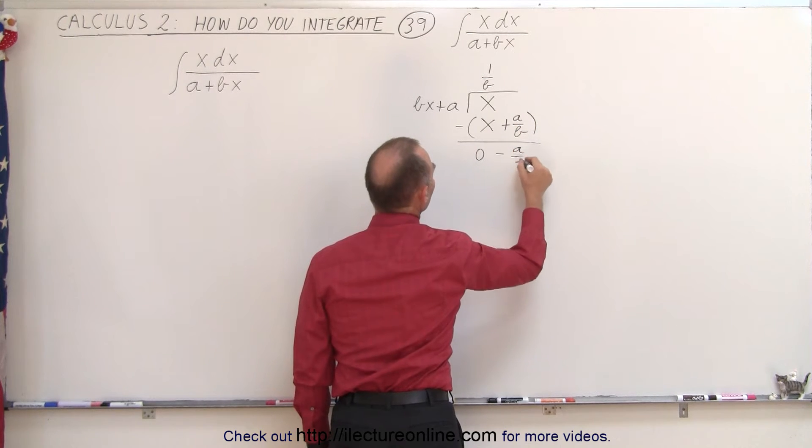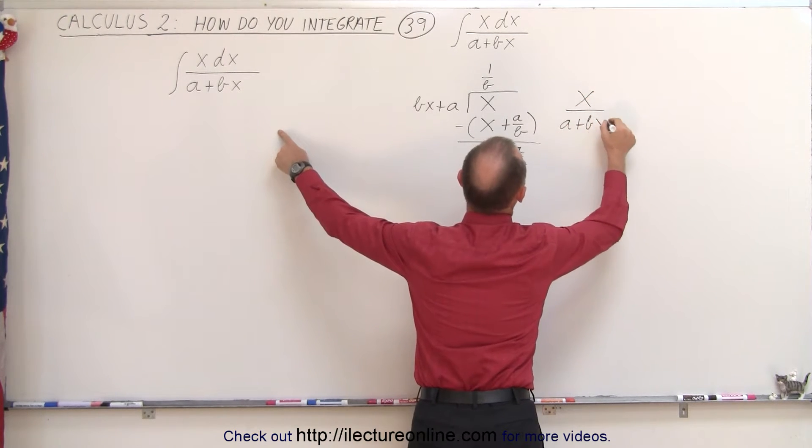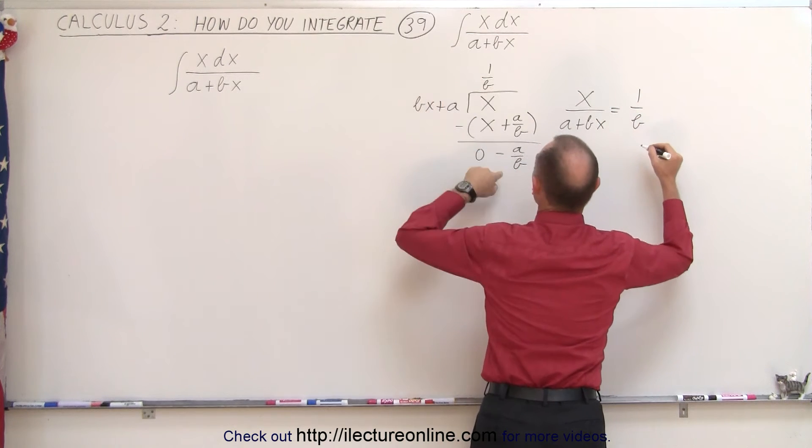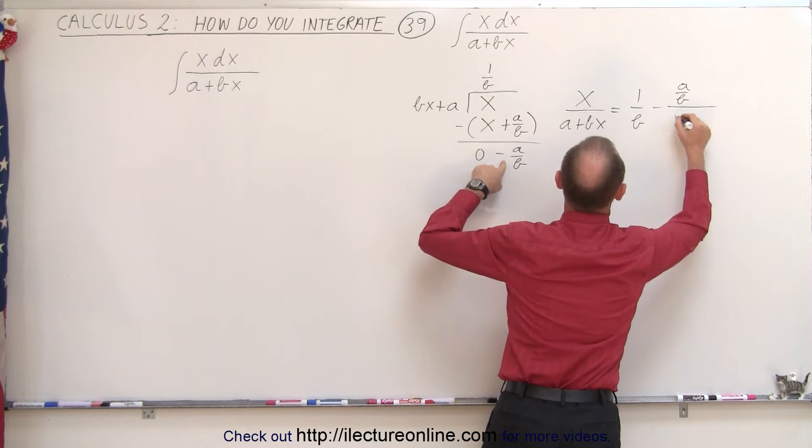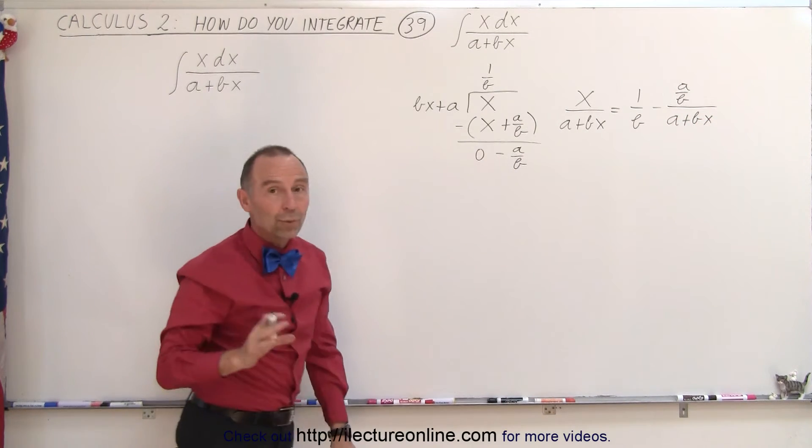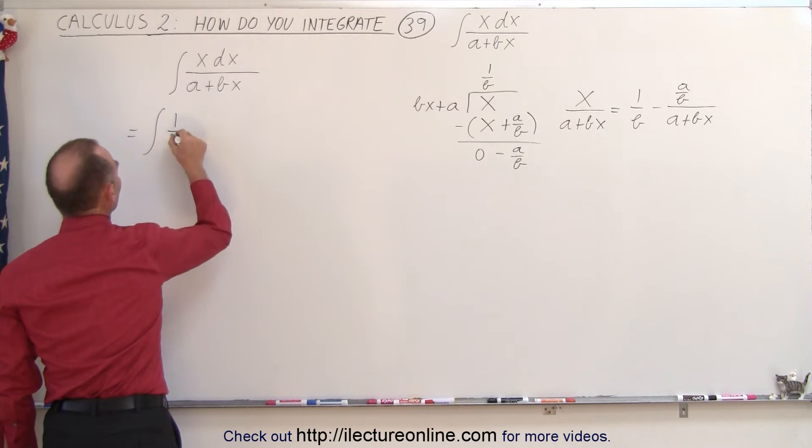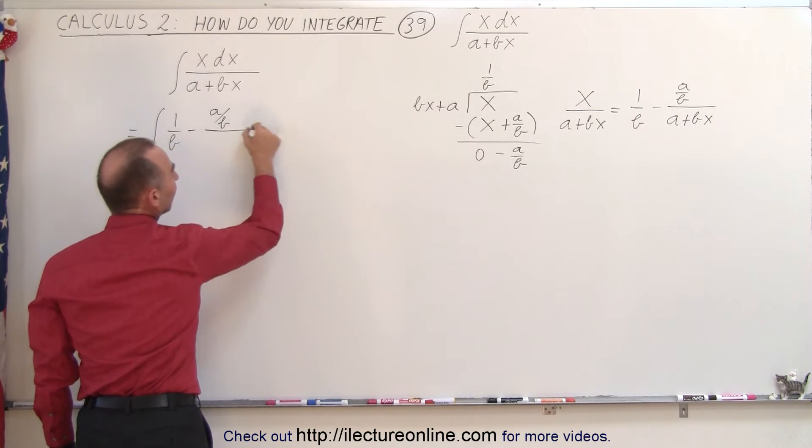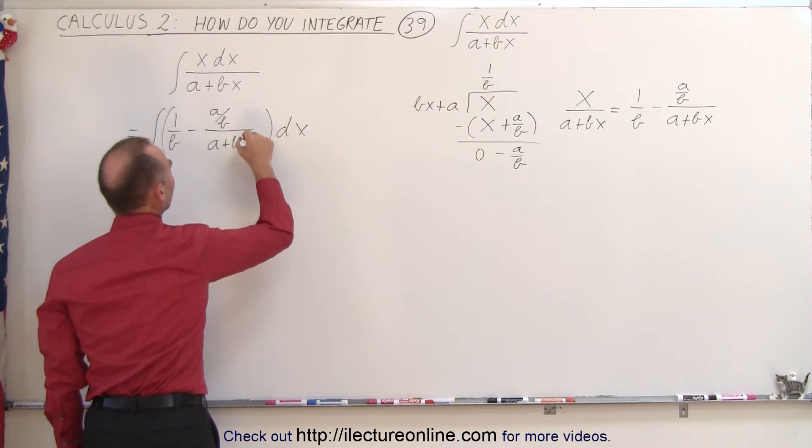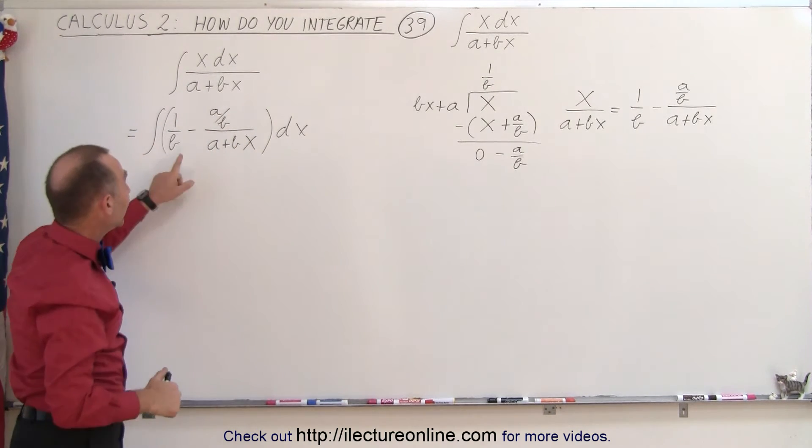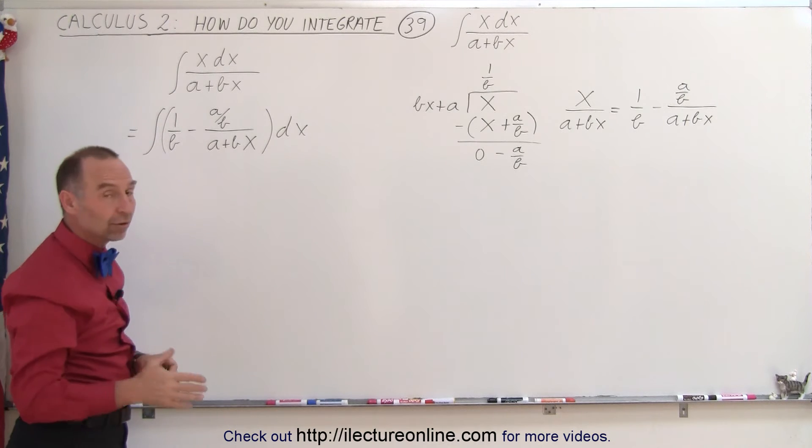And 0 minus this is minus a over b. Which means that we can take the fraction x over a plus bx and write it equal to 1 over b plus the remainder over the denominator which is minus a over b divided by a plus bx. So let's go ahead and rewrite our integral as follows. So this can now be written as the integral of 1 over b minus a over b divided by a plus bx and the whole thing times dx. So now we know that we can actually integrate each one of these two integrals separately and quite easily as well. Because we've done these before.